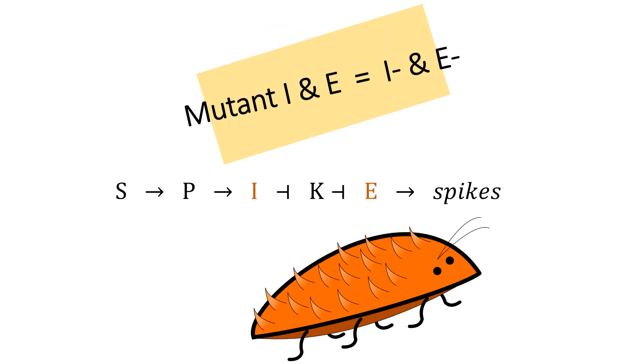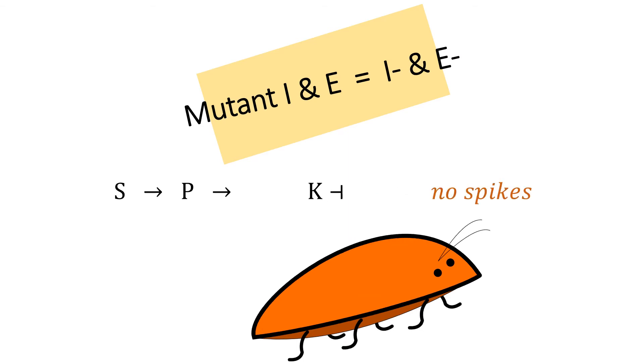If a cell has both mutant I and E genes, the I gene product will not be able to inhibit the K gene product from blocking the E gene's transcription. Even if the mutant E gene is not blocked by the K product, it will still result in improper spike protein structure. This beetle would be smooth if all its ectoderm cells have mutant I and E genes.